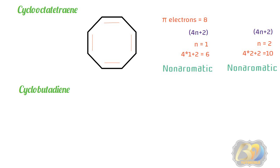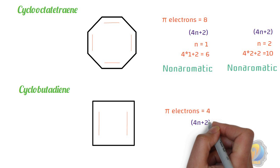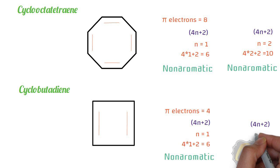Next is cyclobutadiene. Cyclobutadiene is cyclic and planar, ring atoms are sp2 hybridized, and it contains alternate single and double bonds. It has 2 pi bonds, meaning 4 pi electrons are present. For n=1: 4×1+2 = 6 — not equal to 4. For n=0: 4×0+2 = 2 — also not equal to 4. Hence, cyclobutadiene is non-aromatic.